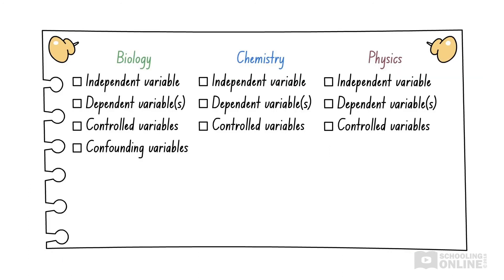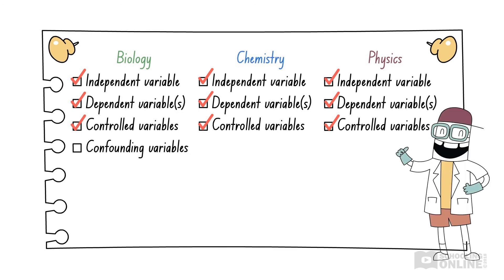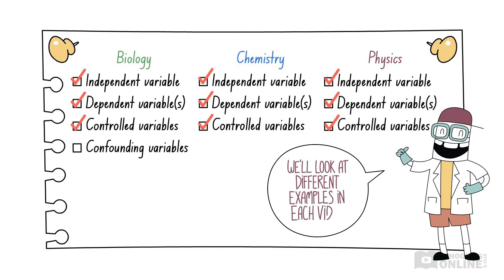Do you study any other science subjects, such as biology or physics? The core ideas of independent, dependent, and controlled variables are the same across all science subjects — the only differences are the experiments you perform. If you study biology, make sure to watch our second lesson on validity for biology, as we will introduce confounding variables. These are variables that are not controlled and may affect the independent and dependent variables, possibly leading to an incorrect conclusion. In chemistry and physics, you don't need to learn about confounding variables, so they haven't been included in this lesson.